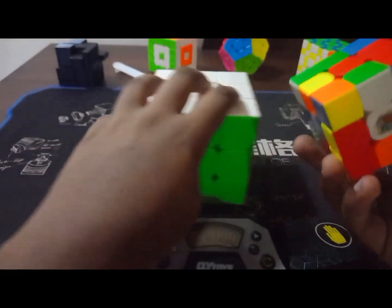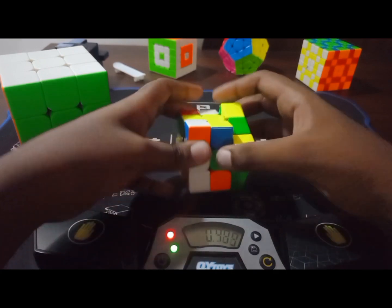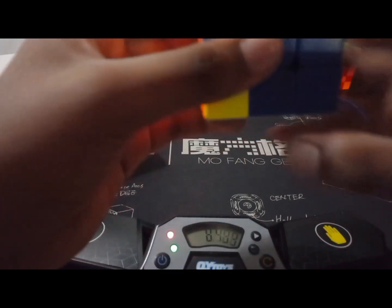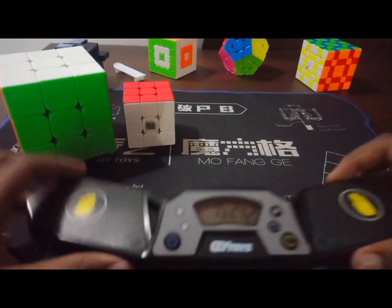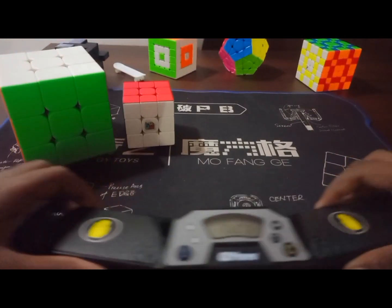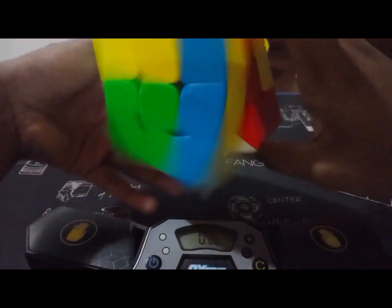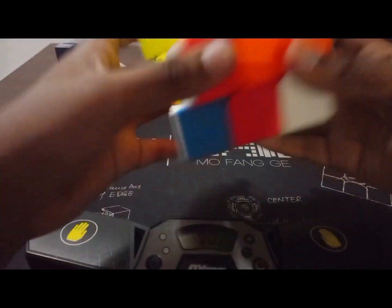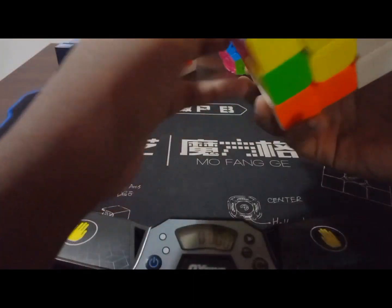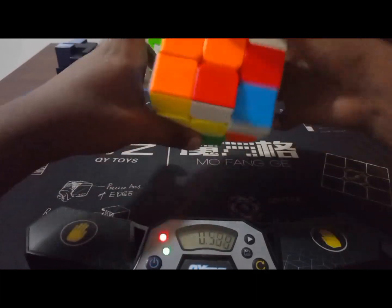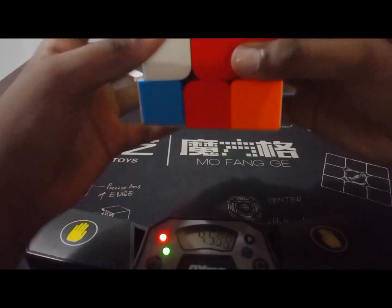Let's do a solve with it. Normal 3x3, I average around 14-15 seconds. Let's do a solve with the normal 3x3 first. Now let's do a solve with the Vaccine cube. Oh, this is very big.